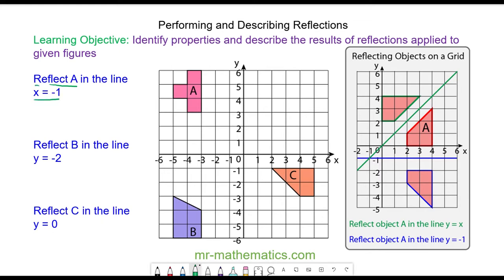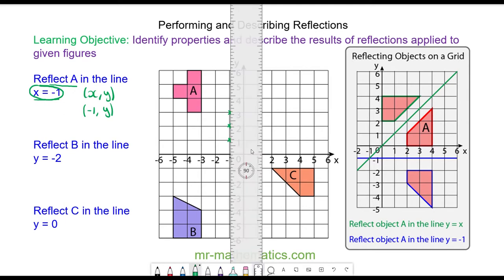The line x equals negative 1 is our mirror line and we need to understand what this looks like. A coordinate pair is made up of an x and a y value, and in the line x equals negative 1 the x value will always be negative 1, which is anywhere along this line. So I'm going to draw a vertical line that passes through these coordinates when x is equal to negative 1. Here is the line x is equal to negative 1 and this is the mirror line.